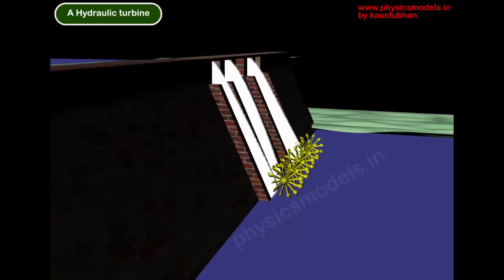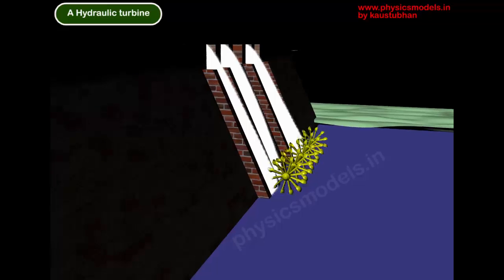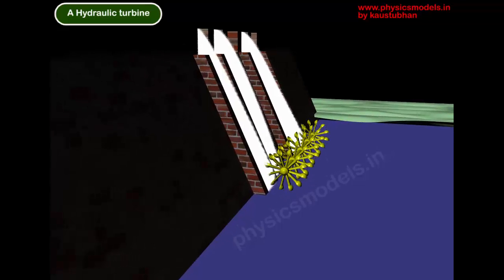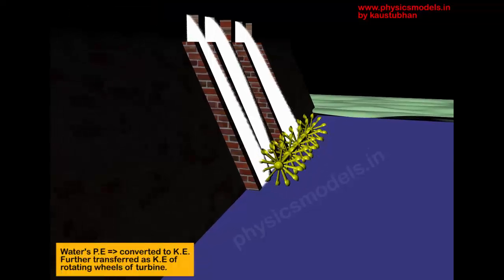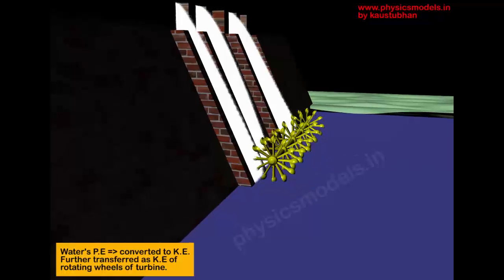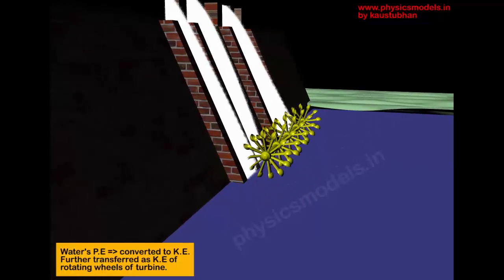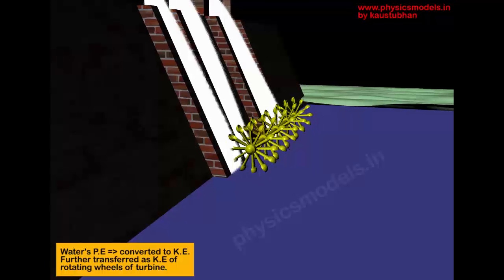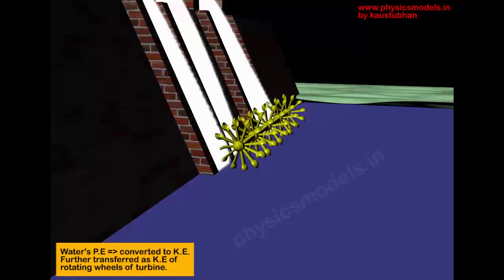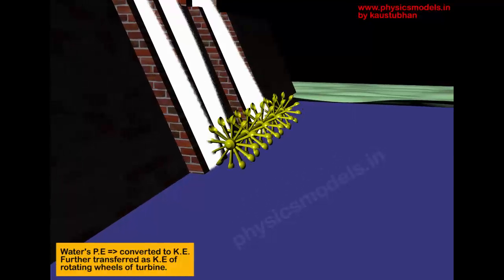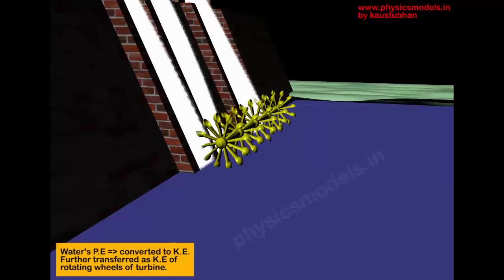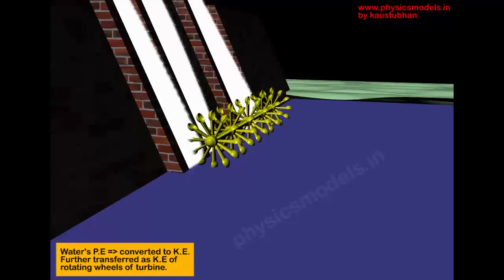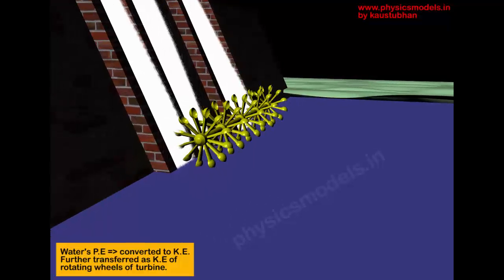By the time it reaches the bottom of that dam, that mgh is converted into kinetic energy—energy of motion—which is ½mv², the same mass but the square of the velocity with which that water is hitting those wheels.